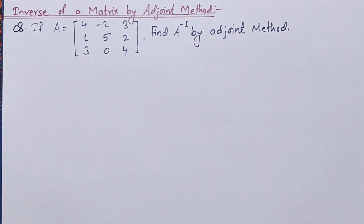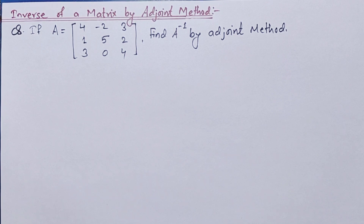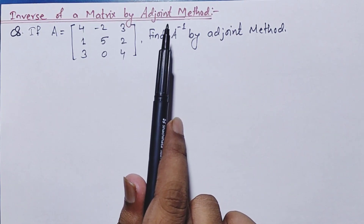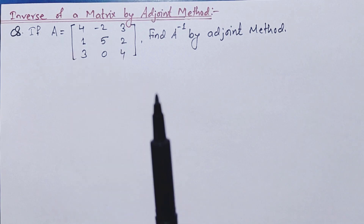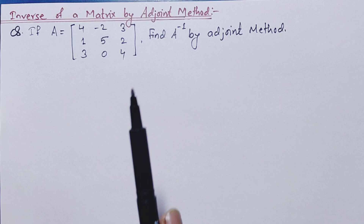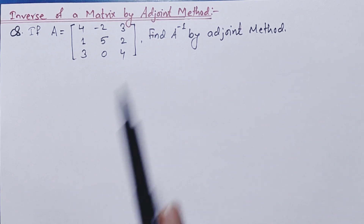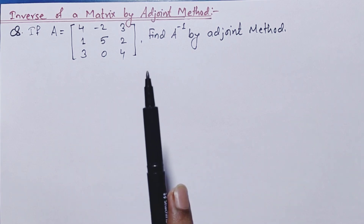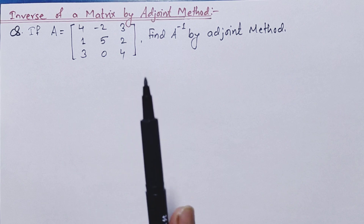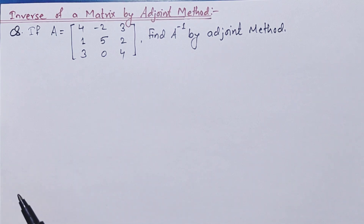Hey guys, welcome back to Civil Learning Online. Today I am going to discuss how to calculate the inverse of a matrix by the adjoint method. In the previous video I showed how to calculate the inverse for a 2x2 matrix, which was very simple. This is also easy — once you watch the whole video you will be able to solve any question based on a 3x3 matrix. So without further delay, let's get started.